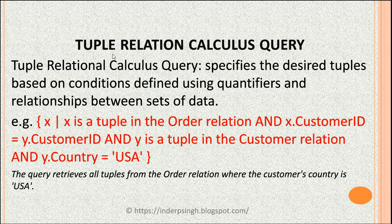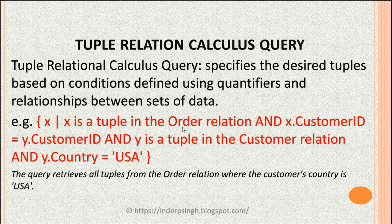A tuple relational calculus query is a question we ask the DBMS. It specifies the desired tuples based on conditions defined using quantifiers and relationships between sets of data. For example, x such that x is a tuple in the order relation — meaning there is a table called 'order' and x is one row in that table.